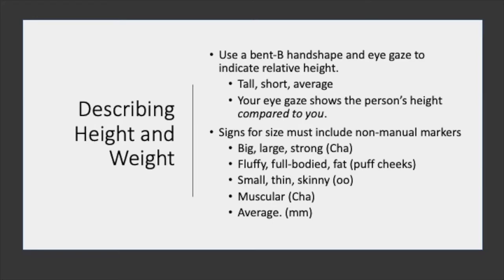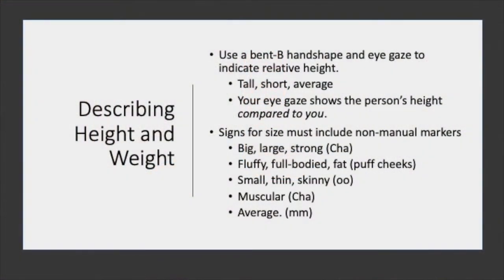In ASL, we describe height using a bent B handshape and eye gaze. You are implicitly indicating someone's relative height, that is their height in relation to you. Your eye gaze shows how tall or short they are in comparison with you. The height sign is fairly literal, so be mindful of how you produce it.